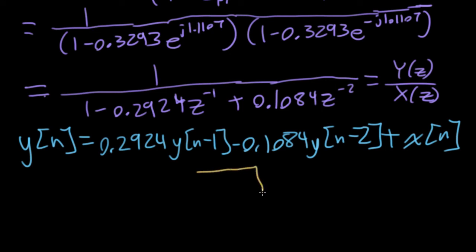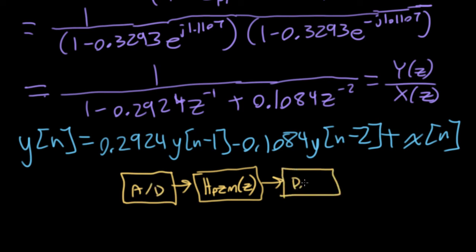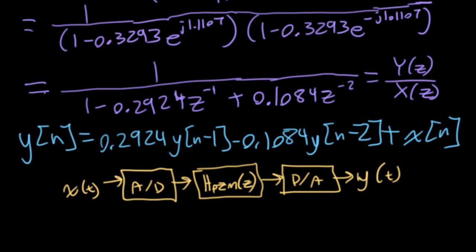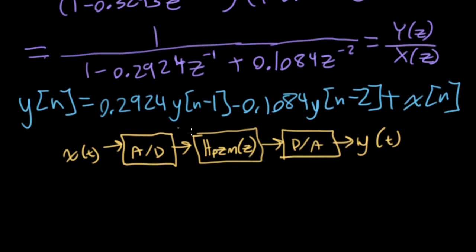And what would we do with this knowledge? Well, we would build a system with this transfer function H pzm. We would stick an analog to digital converter on one end, a digital to analog converter on the other. The user would put in an x of t and get out a y of t. And hopefully this will be close enough to the original analog system that we're modeling that the user won't notice the difference.